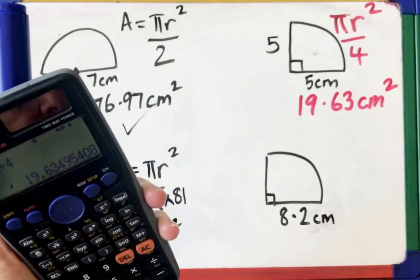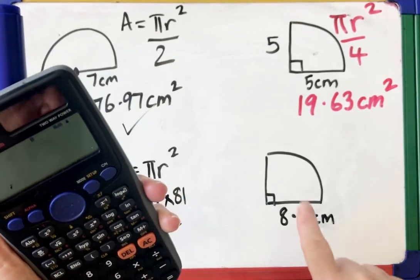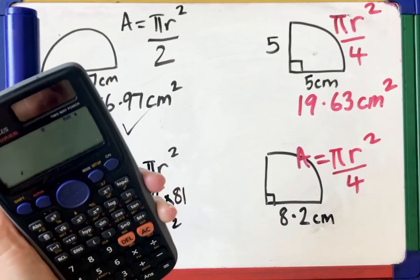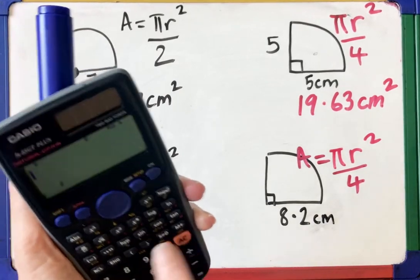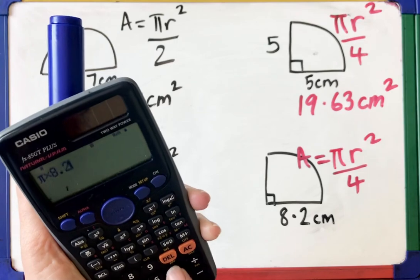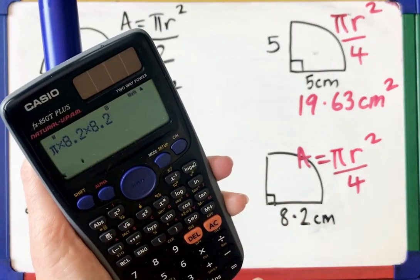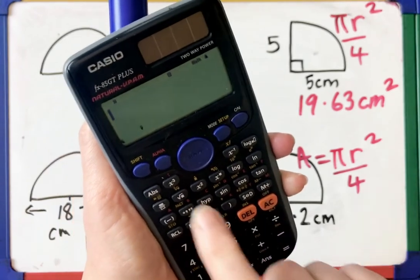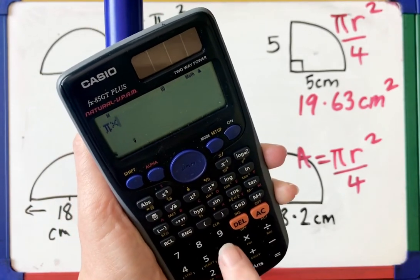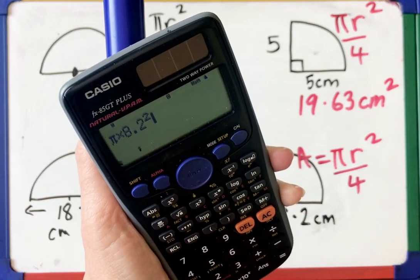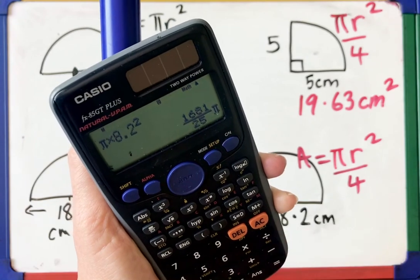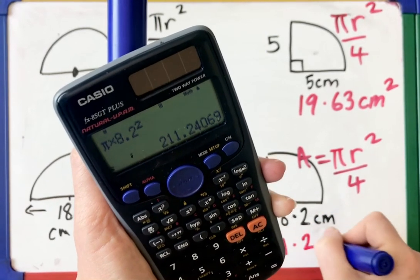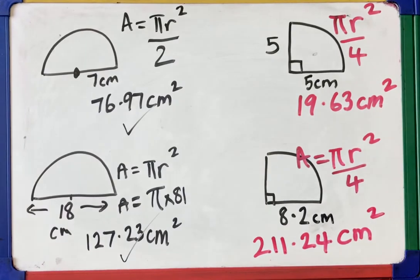For the quadrant with radius 8.2: the full circle is pi r squared, but divide by 4 afterwards. On the calculator: shift pi times 8.2, then press the x-squared button to automatically square the radius. That gives 1681 over 25 pi; press scooby-doo and the area is 211.24 centimetres squared.